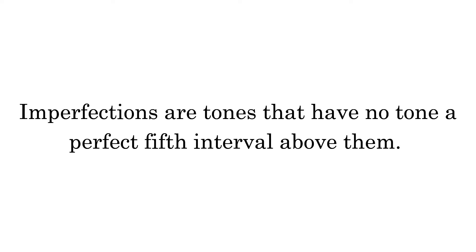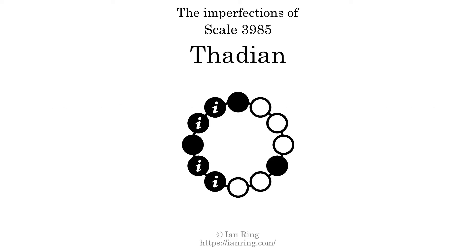Imperfections are tones that have no tone a perfect fifth interval above them. This scale has 4 imperfections. They are at positions here, here, here, and here.